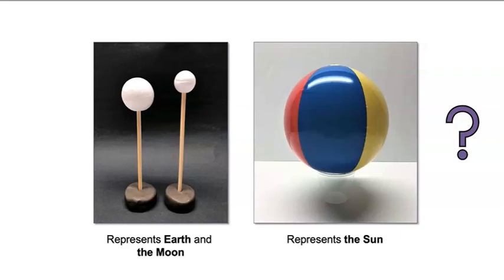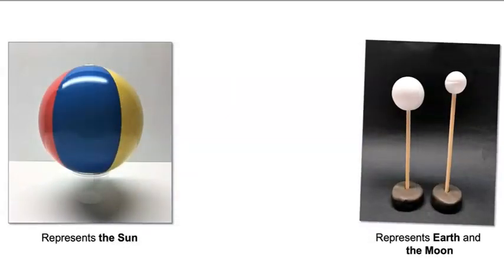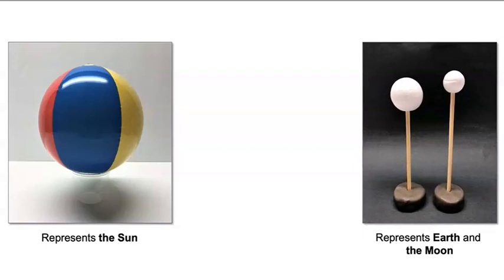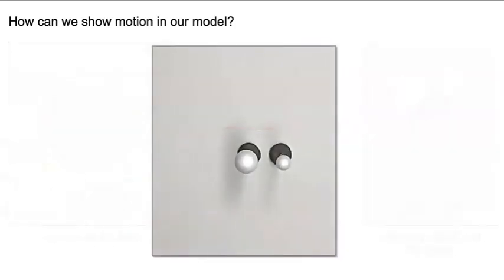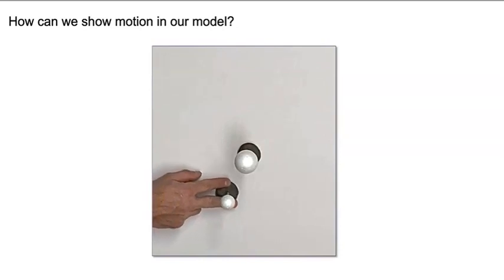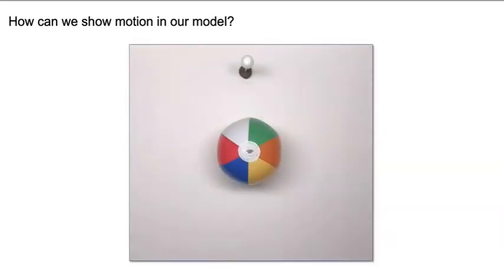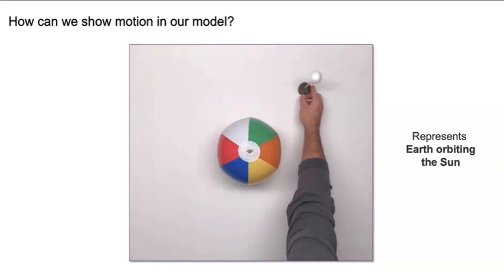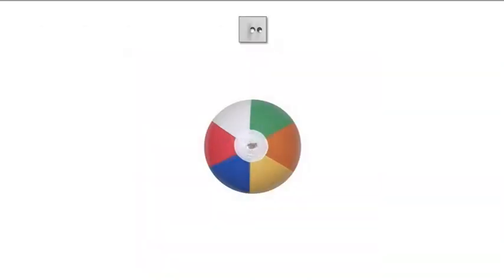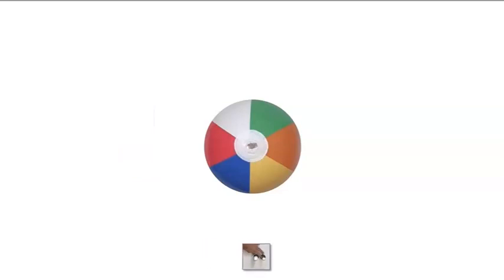Now, where should we put each ball? Remember, Earth and the moon are only about 239,000 miles apart, and both Earth and the moon are very far away from the sun. So let's put the two foam balls close to each other but far away from the beach ball. How can we show motion in our model? Let's move the small foam ball around the large foam ball — this movement represents the moon orbiting Earth. Let's also use the wooden dowel to move the large foam ball around the beach ball, representing Earth orbiting the sun. Both of these orbits happen at the same time, so the moon orbits Earth while Earth orbits the sun.